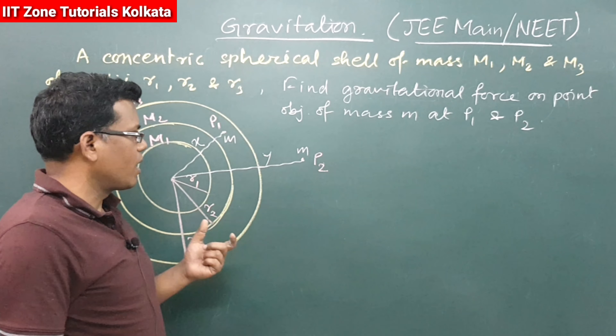Therefore the net force on the test mass at p1 equals G·m1·m / x² plus G·m2·m / x². When considering the gravitational force outside a spherical shell, the entire mass is treated as concentrated at the center, so we use distance x from center O to p1. Written vectorially, this force acts towards center O.